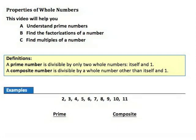Let's take a look at some examples to help us understand prime and composite numbers. I have a list of numbers, and I'm going to determine whether each is prime or composite. Let's start with two — the only numbers that divide evenly into two are two and one, so two is a prime number. Three: only itself and one divide into three, so three is prime. Four: two will divide into four, so four is a composite number. Five is prime. Six: both two and three divide into six, so six is a composite number.